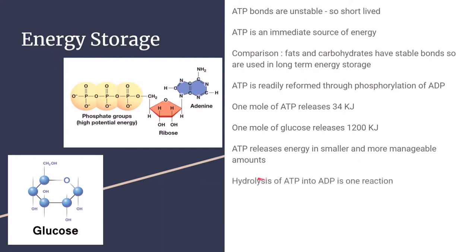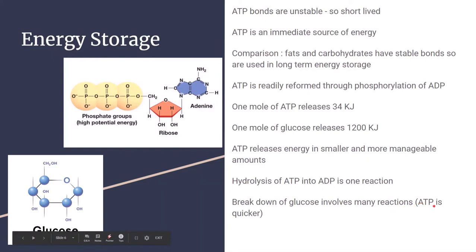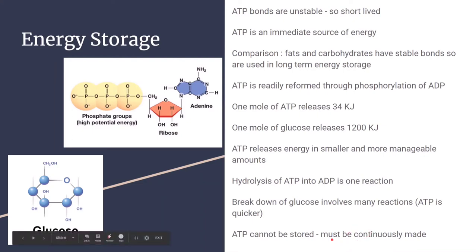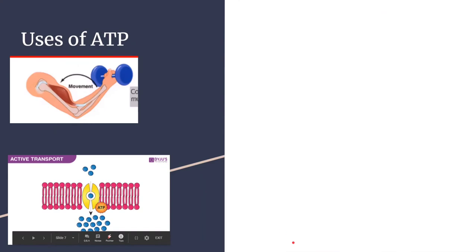The hydrolysis of ATP into ADP occurs in just one reaction, whereas the breakdown of glucose involves many reactions, making ATP a much quicker release of energy. ATP cannot be stored — it must be continuously made because it is unstable and short-lived. Long-term energy storage is the role of fats and carbohydrates. ATP is therefore continuously made in our body because we cannot store it.